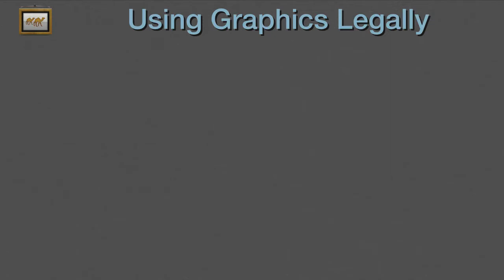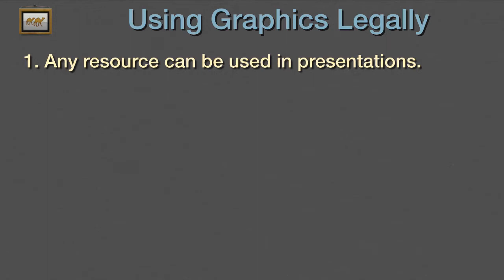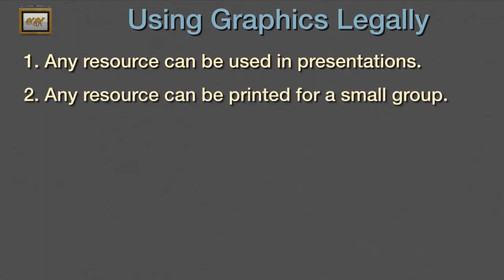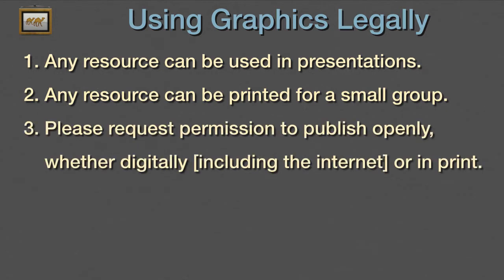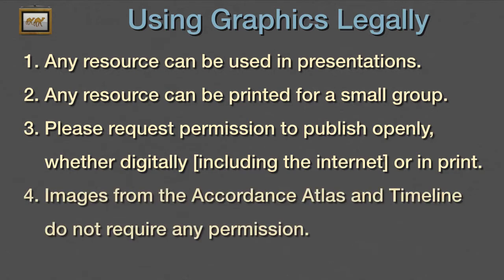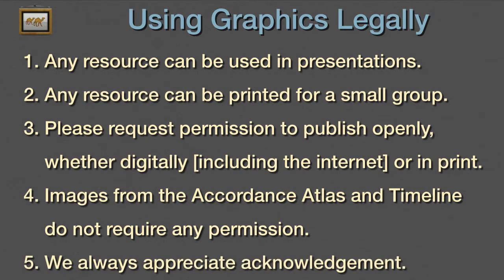Users often ask if there are any copyright restrictions for the graphics found in Accordance modules. Here's a summary of our policy. First, any resource can be used in presentations. Second, any resource can be printed for a small group. However, we ask that you request permission to publish openly, whether digitally — including the internet — or in print. That doesn't apply to the Accordance Atlas and the timeline; those images never require our permission. However, we always appreciate acknowledgement. A tag like 'from Accordance Bible Software' not only lets people know you're using a trustworthy source, but lets them know where they can purchase similar quality resources for themselves.